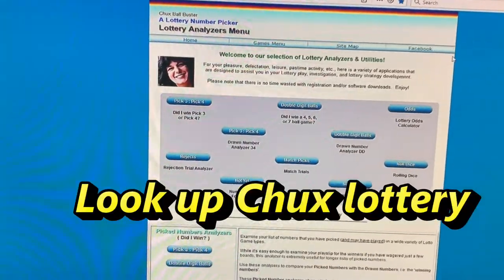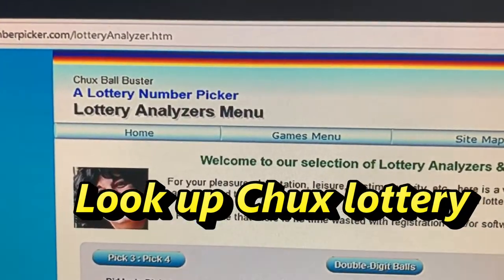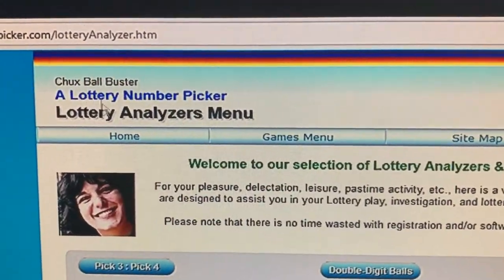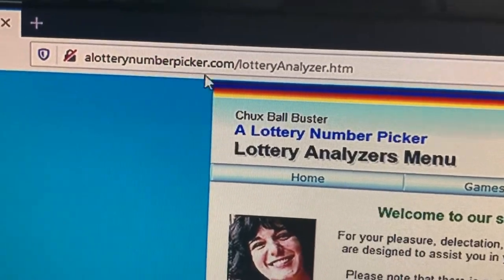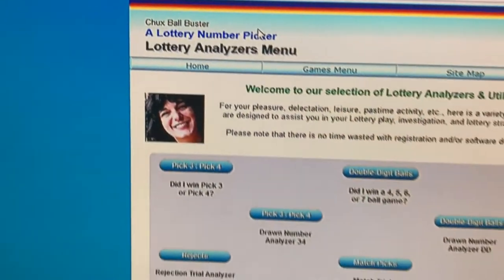You're going to open a free software, just google it. It's called Chuck's or Chuck's Ball Buster. Here is the website: lotterynumberpicker.com.